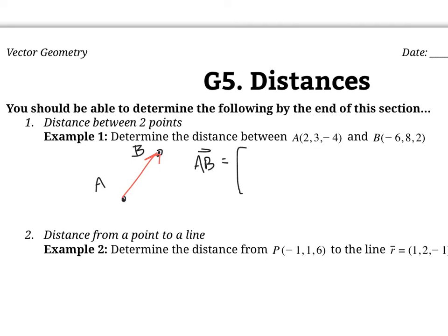Starting with B minus A, it's going to be negative 6 minus 2, 8 minus 3, and 2 minus negative 4. So vector AB is negative 8, 5, and 6.